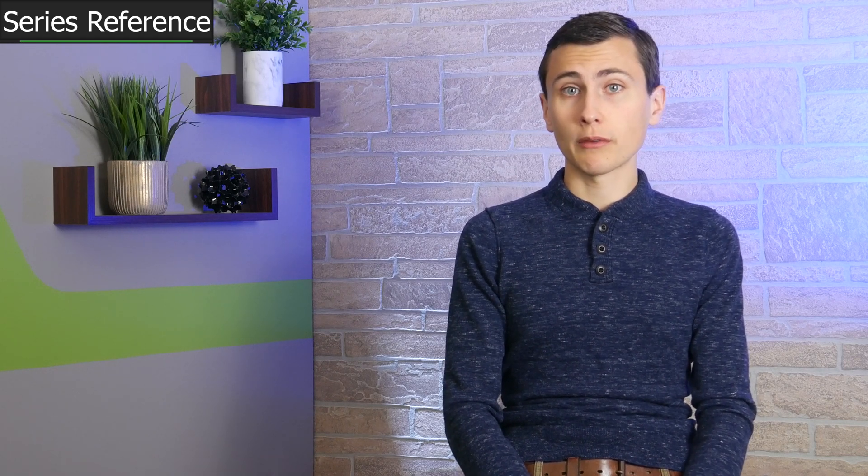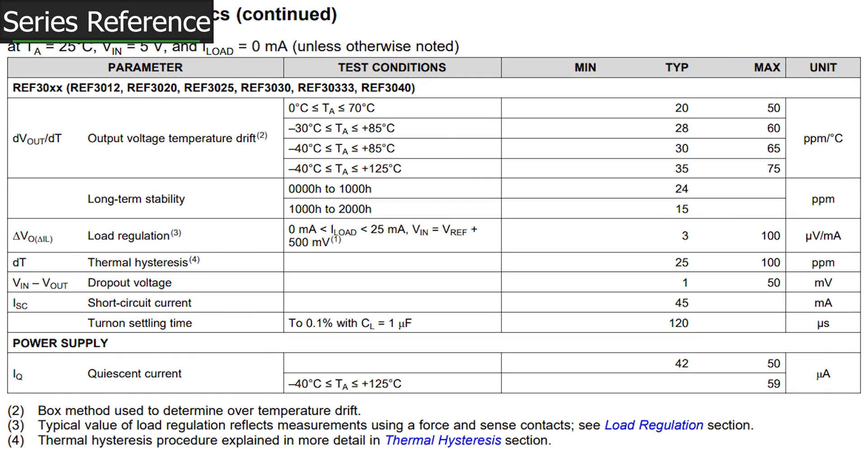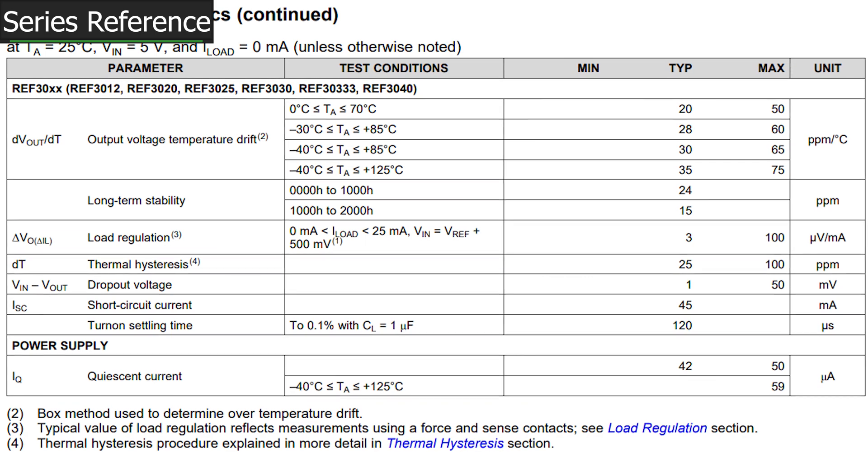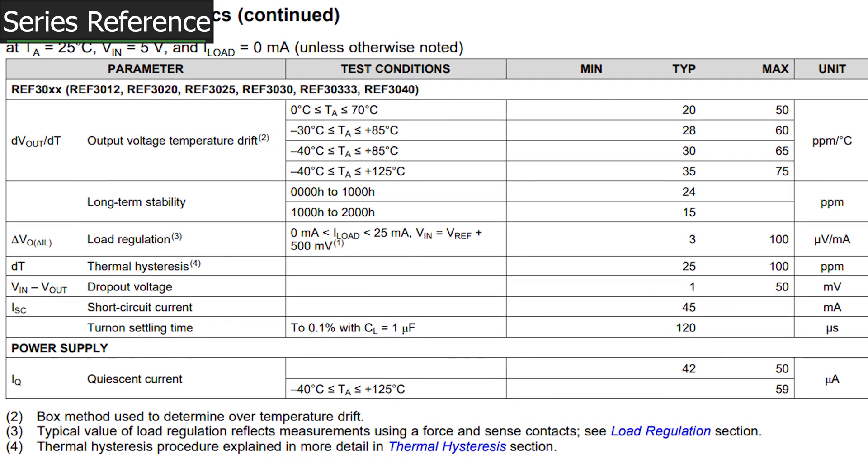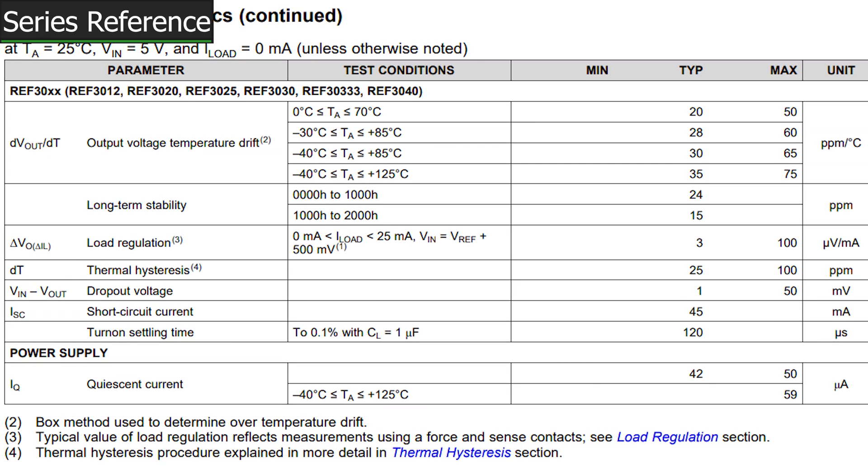Looks like this series reference is rated for between 20 and 50 ppm per degree of temperature change. That's a lot worse than the shunt reference, though line and load regulation are very good. At this point, I feel the need to say, either of these could work. The analysis can be done to determine how much error these references would add to Seth, and it would be a very small amount. However, accuracy is not our only goal here. I see a bigger problem with both of these solutions.